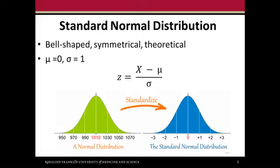We can take this idea of standard scores and apply that to the normal distribution. A standard normal distribution is bell-shaped, symmetrical, and theoretical. On the left side here in green, we can see a normal distribution of data and the mean is 1010. We can use z-scores to standardize it and then that would create the curve that we see on the right-hand side in blue.